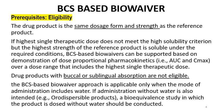Over a dose range that includes the highest single therapeutic dose. For example, if the highest strength is 100 mg and the highest therapeutic dose is 300 mg (3 tablets taken at a time), and if the 300 mg API does not meet the solubility criteria but the 100 mg highest strength does, then you can justify based on linear pharmacokinetics. Drug products with buccal or sublingual absorption are not eligible.